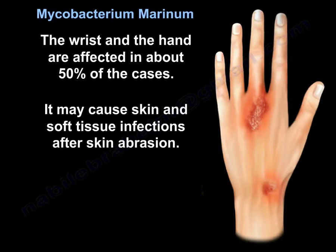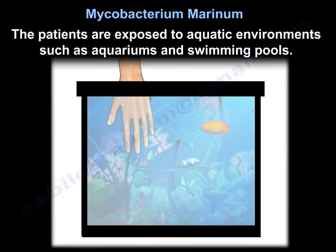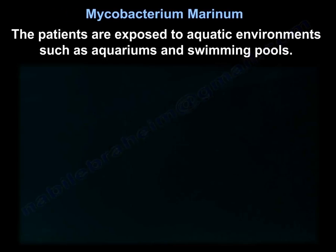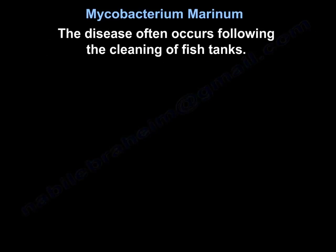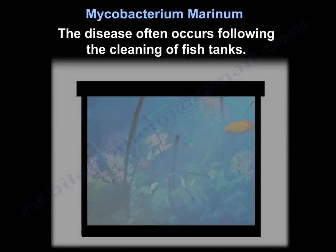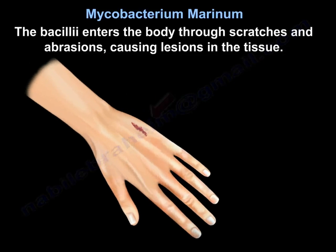The wrist and the hand are affected in about 50% of cases. It may cause skin and soft tissue infections after skin abrasion. Patients are exposed to aquatic environments such as aquariums and swimming pools, and the disease often occurs following cleaning of fish tanks. The bacilli enters the body through scratches and abrasions, causing lesions in the tissue.